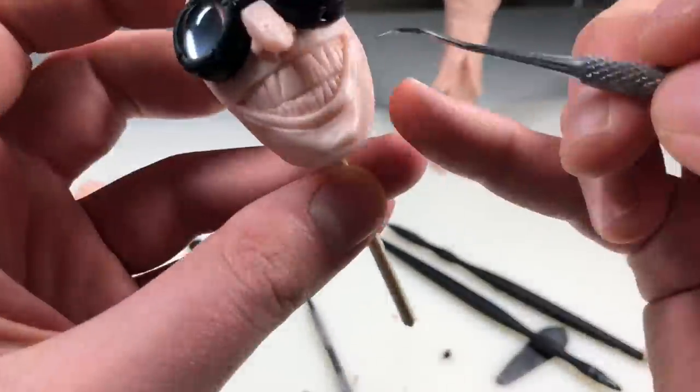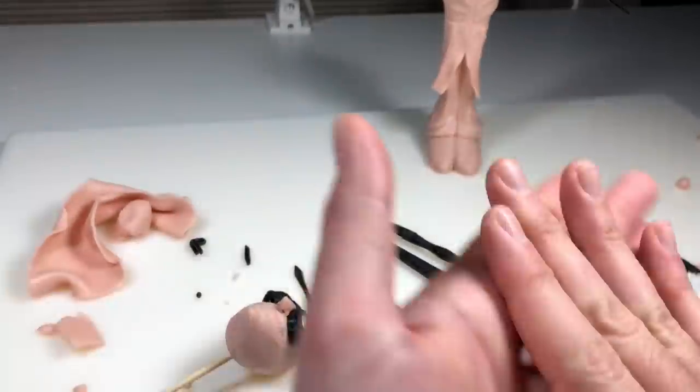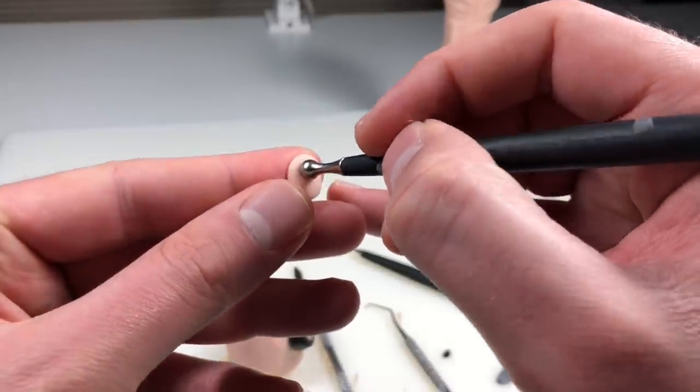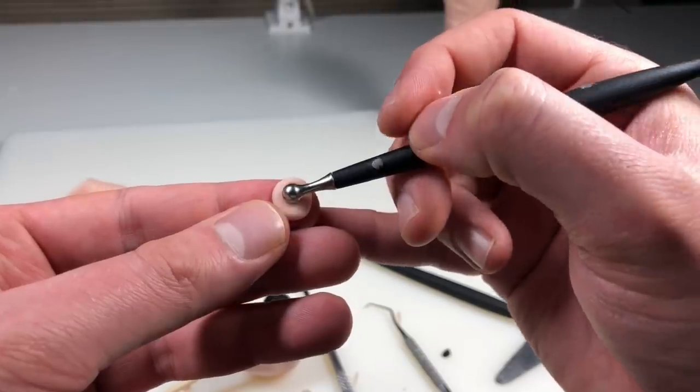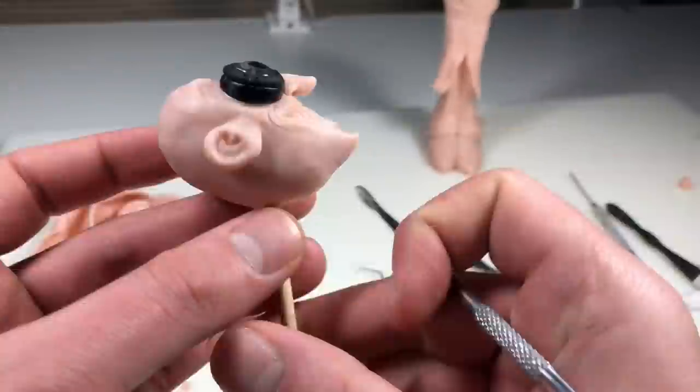And yes, I am aware that I forgot to add arms or temples to the sides of the goggles to hold them onto his head. I'll have to add them at a later date. Now I'm just making some ears for him. Not sure why I sculpted this one separate from his head, but whatever. It worked.